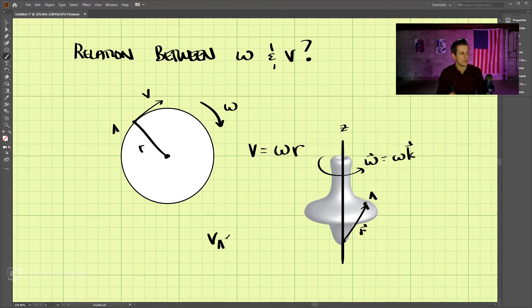The velocity at A is equal to the vector omega, which we just wrote here, cross, the cross product, with R.